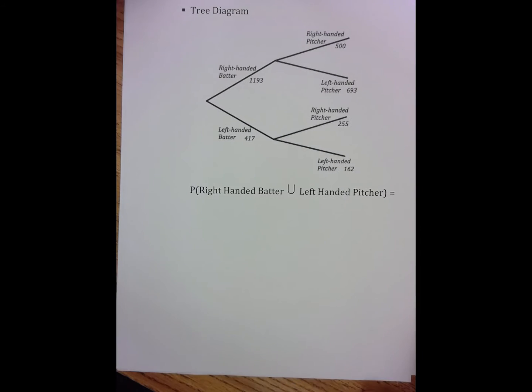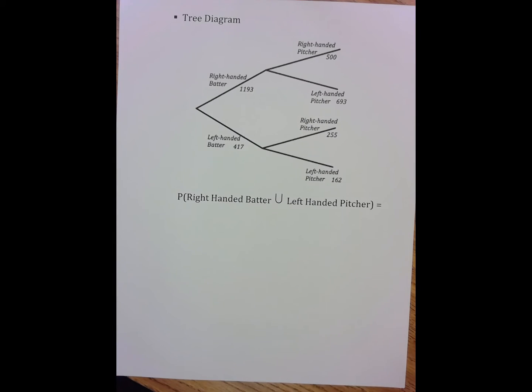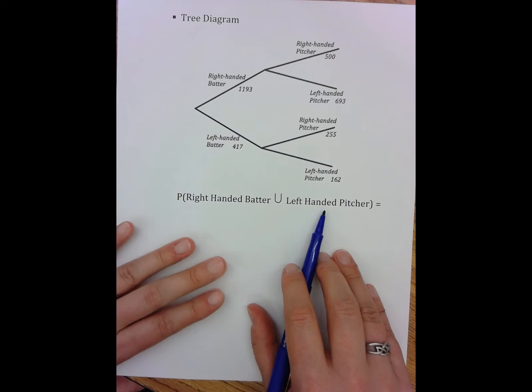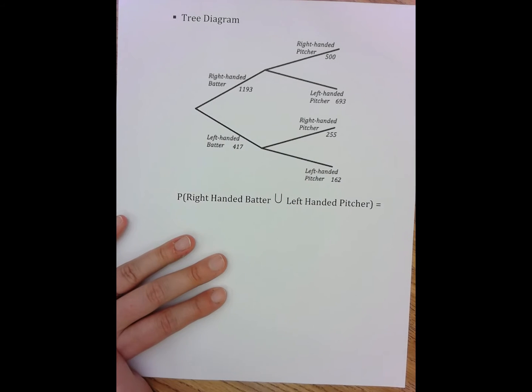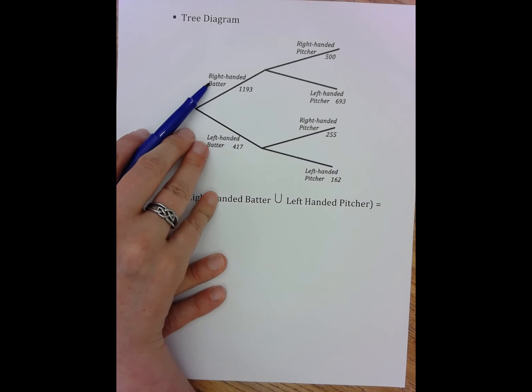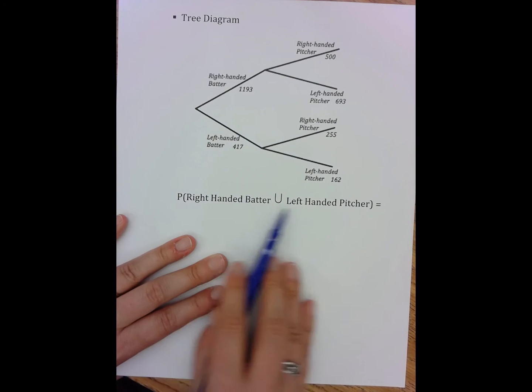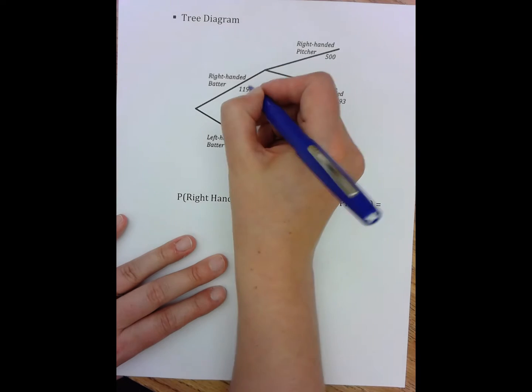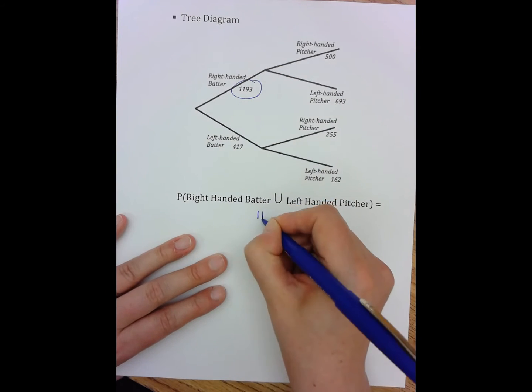Let's look at union with a tree diagram now. In the tree diagram, union again, I am really looking for anyone who says that they are a right-handed batter or they say they're a left-handed pitcher. So when I look at this, I first start at my first split. And I say, well, does this group of people say that they're either right-handed batter or left-handed pitcher? It turns out that all of those people say right-handed batter. So that's 1,193 plus.